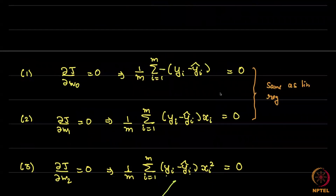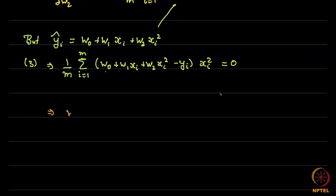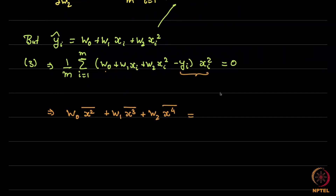The first term gives w₀·⟨x²⟩, the next term gives w₁·⟨x³⟩, and the third term gives w₂·⟨x⁴⟩. The right-hand side becomes ⟨x²y⟩. I will call this equation 6.